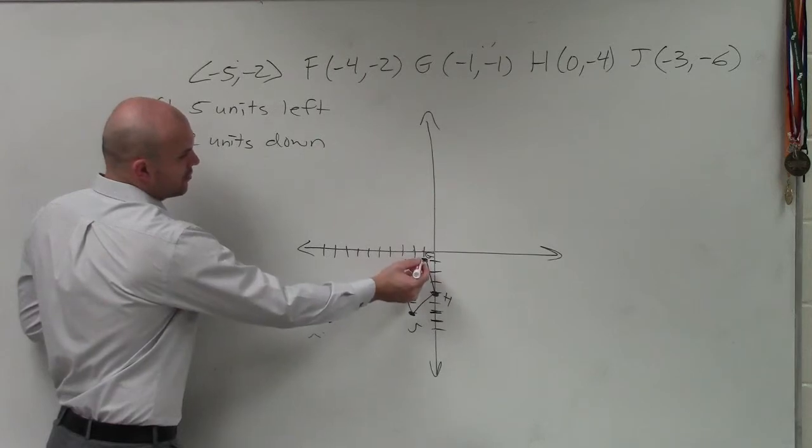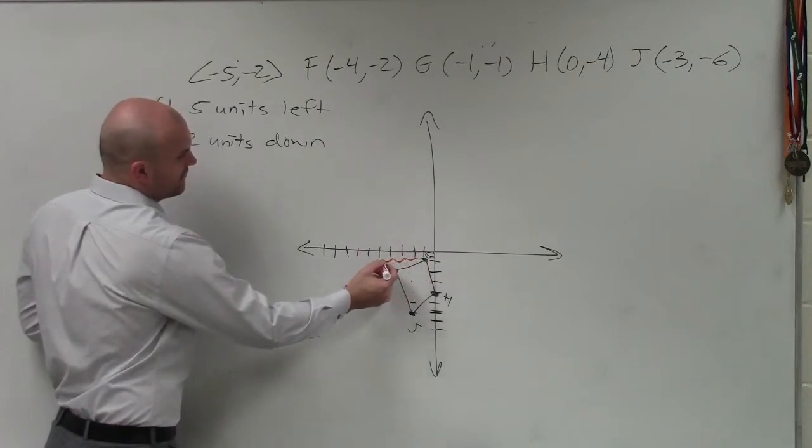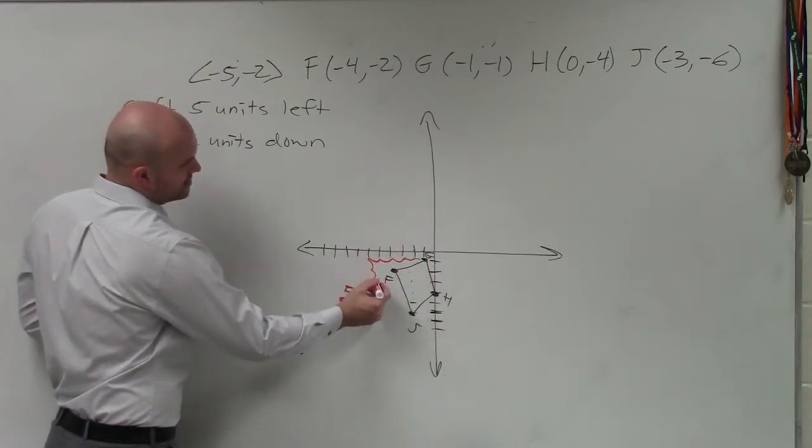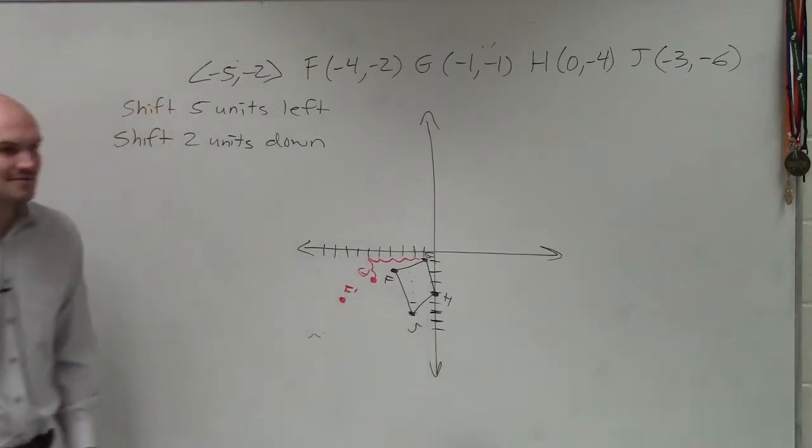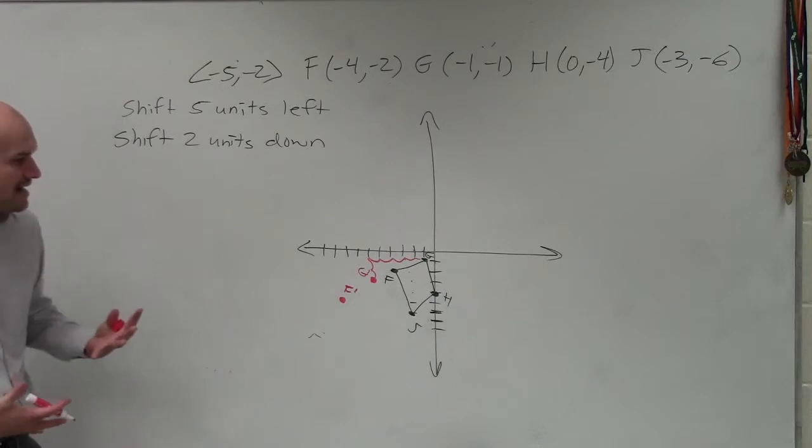G: 1, 2, 3, 4, 5, and then 1, 2. Do you guys see how I just moved G five units to the left, two units down? And you can just do that now with every point.